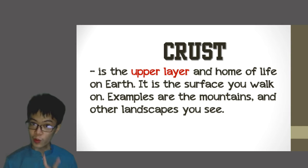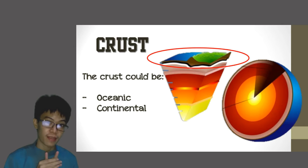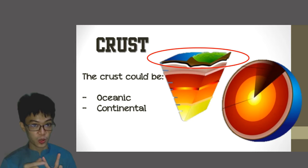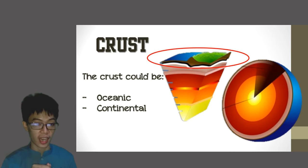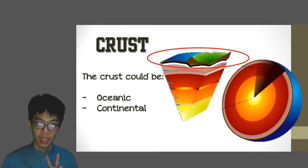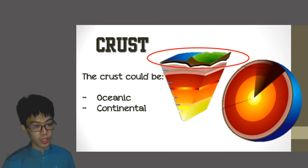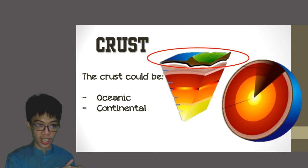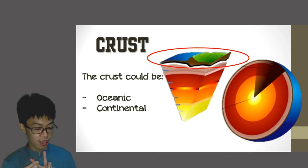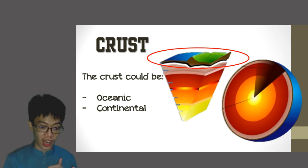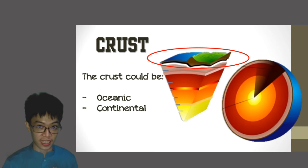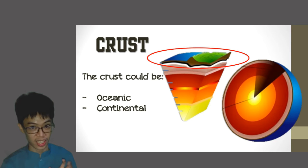Basically, the crust is everything we see on the surface of the earth — anything made up of rock, sand, and gravel. There are two types of crust: the dry crust, also called the continental crust, and the crust beneath the ocean, called the oceanic crust. The oceanic crust is wet and the continental crust is dry.